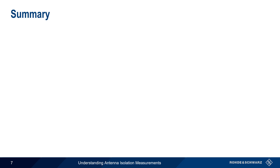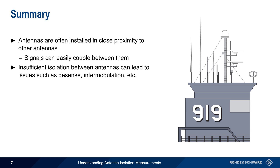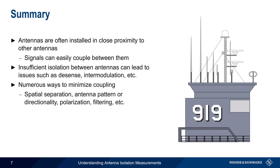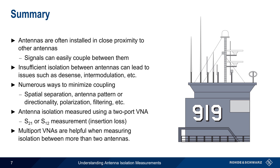Let's end with a brief summary. Antennas are often installed in close physical proximity to other antennas, and because of this, signals can more easily couple between them. If the isolation between antennas is insufficient, this can lead to many issues such as receiver desensitization, intermodulation, etc. There are numerous ways to minimize coupling or increase isolation, the most common of which are increased spatial separation, antenna patterns or directionality, polarization, and filtering. The amount of isolation between two antennas is normally determined by using a two-port VNA to make an S21 or S12 measurement. Isolation can also be measured using multi-port VNAs, which is particularly useful when evaluating high antenna density installations.